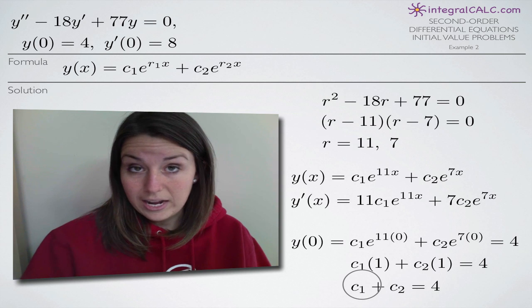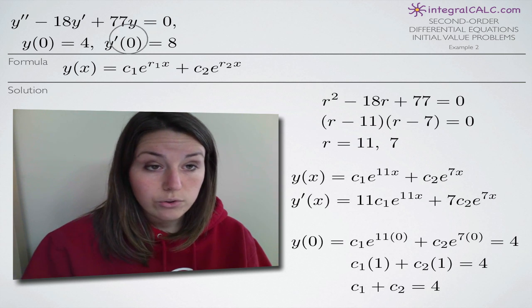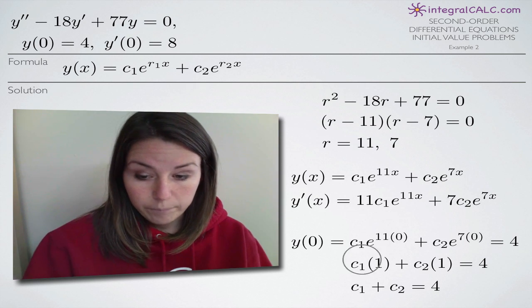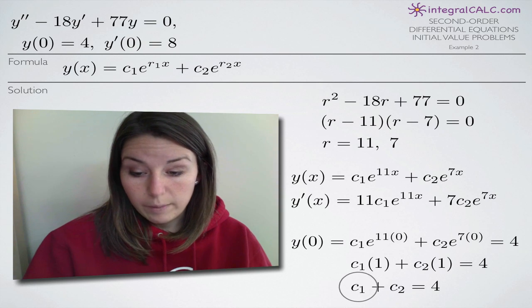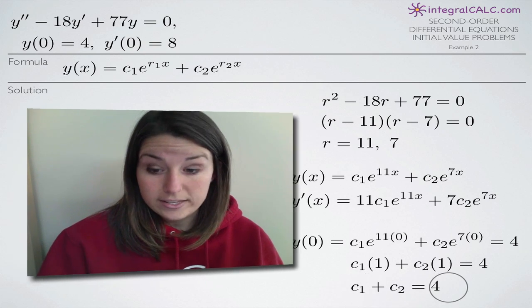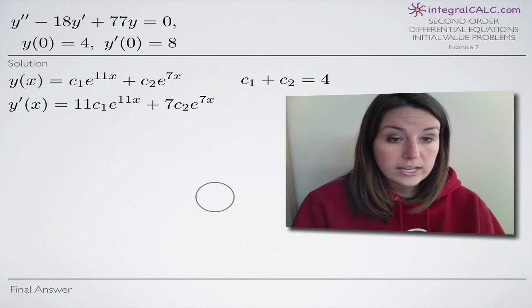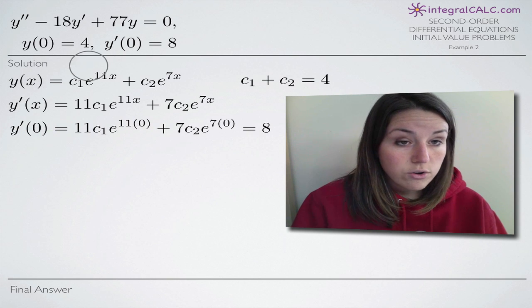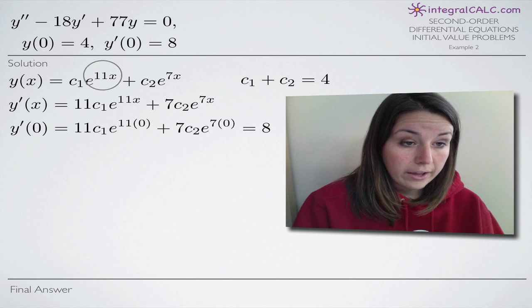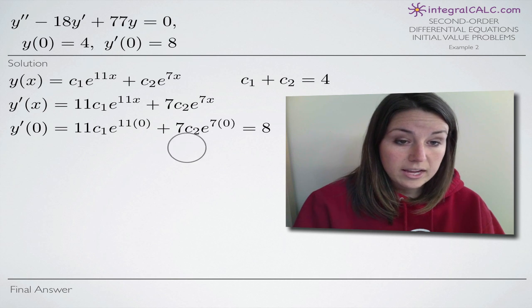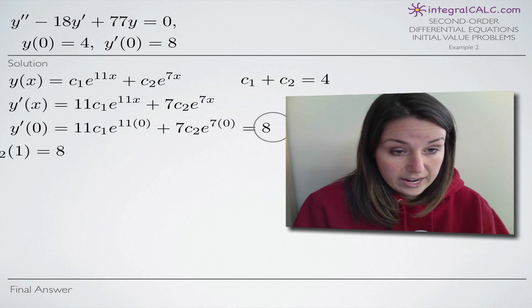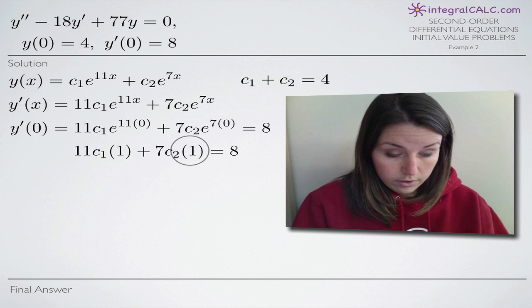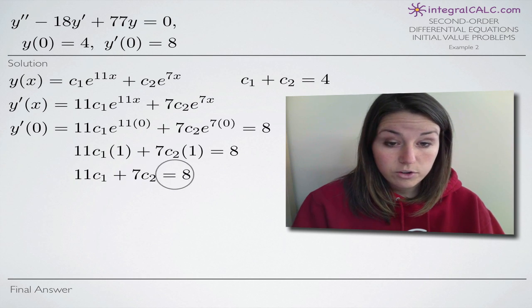Now we use our second initial condition, y prime of 0 equals 8. We plug in 0 for x into y prime of x and set it equal to 8. Again, e to the 0 becomes 1 for both terms, so we end up with 11c sub 1 plus 7c sub 2 equals 8.